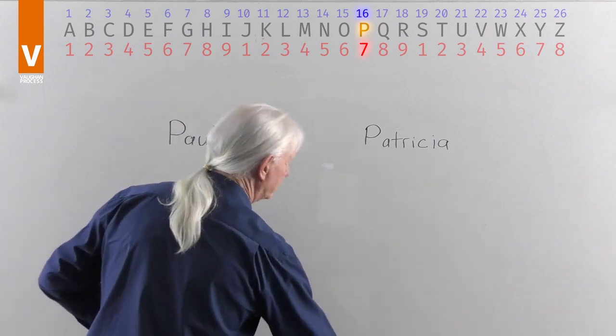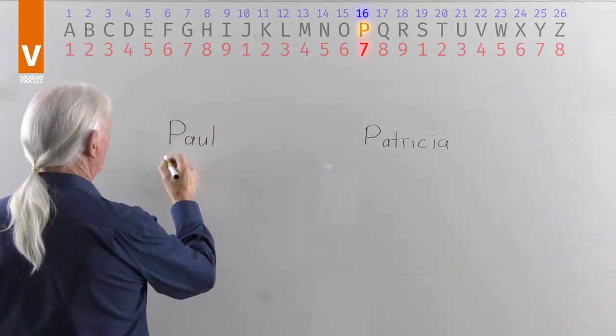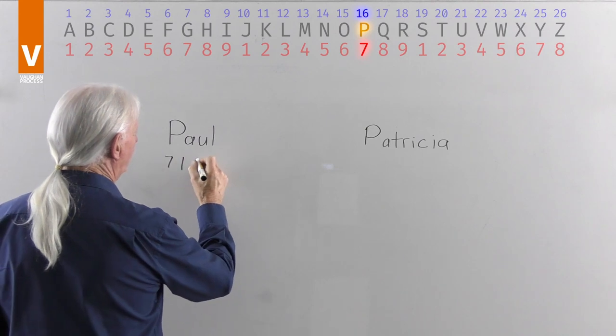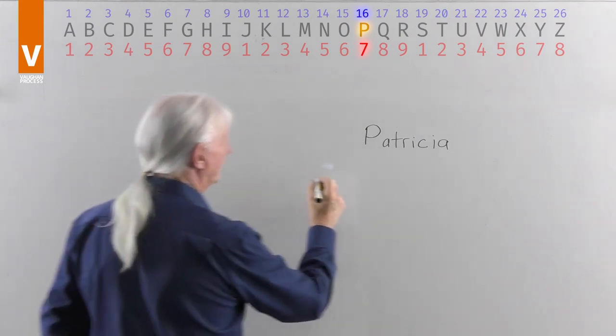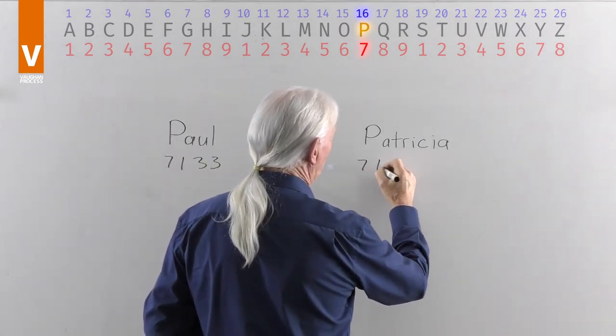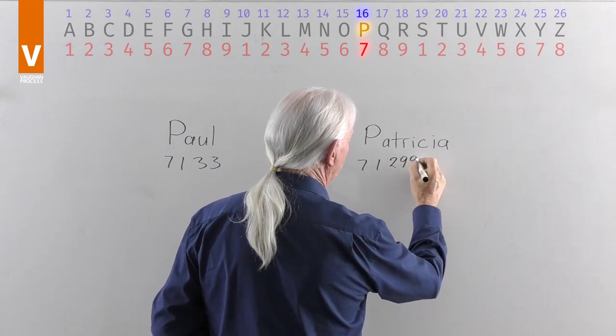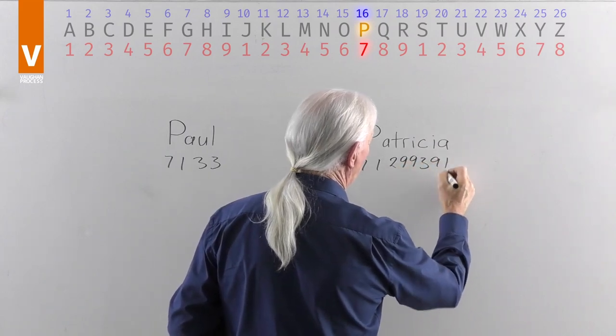So now that I've talked about the P, Paul, seven, one, three, and three. Patricia, seven, one, two, nine, nine, three, nine, and one.